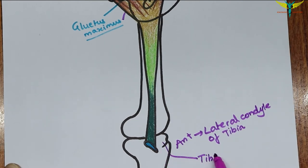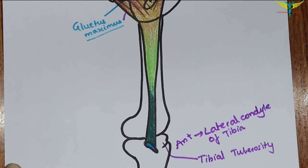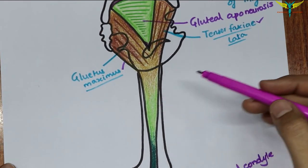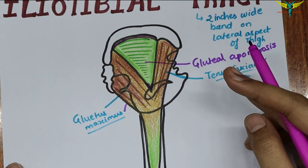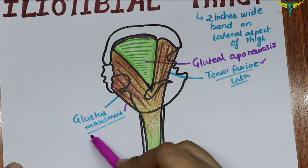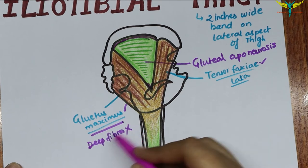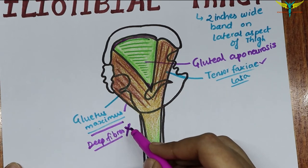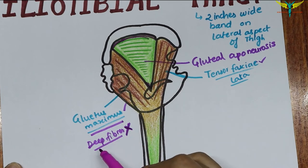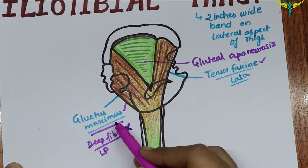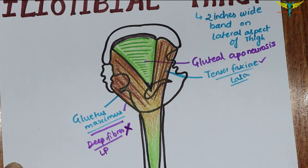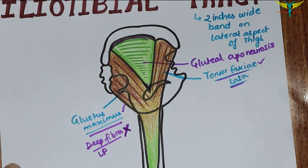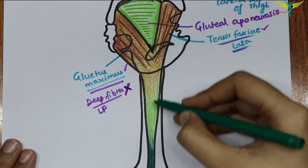The upper part of the iliotibial tract provides insertion to two muscles: the gluteus maximus — except for the deep fibers of its lower half — and the tensor fasciae latae.